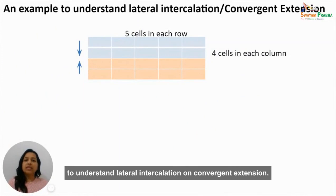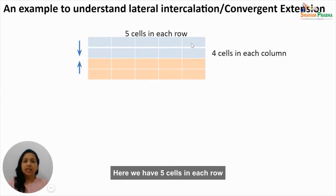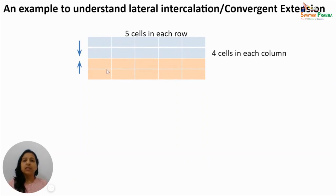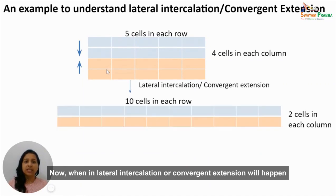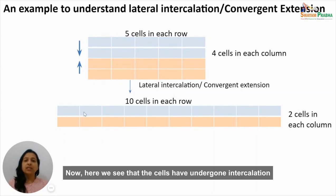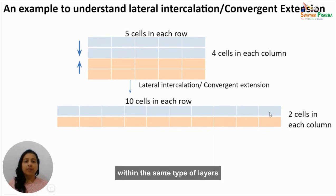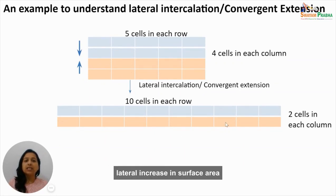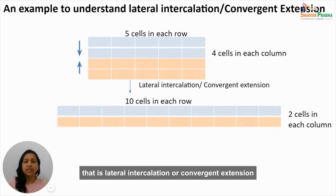To understand lateral intercalation or convergent extension: consider five cells in each row and four cells in each column — a total of 20 cells with two different types in upper and lower rows. When lateral intercalation happens, there will be two rows with ten cells in each. The cells undergo intercalation within the same type of layers with no intermixing between layers. The total number of cells remains 20, but there is a lateral increase in surface area.